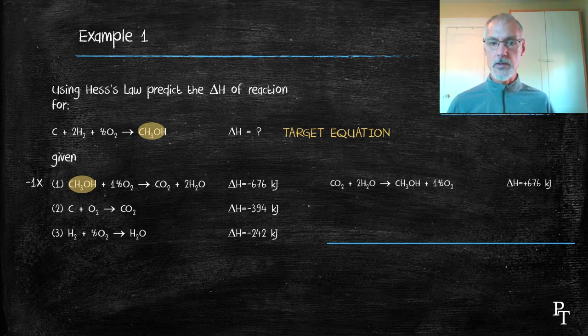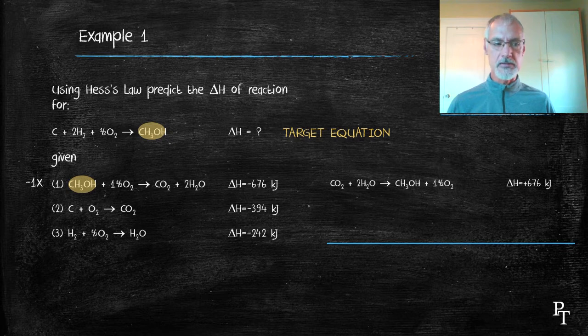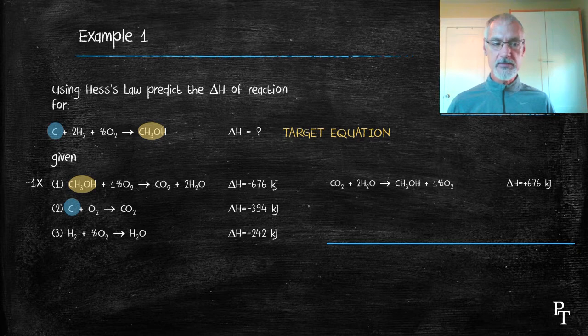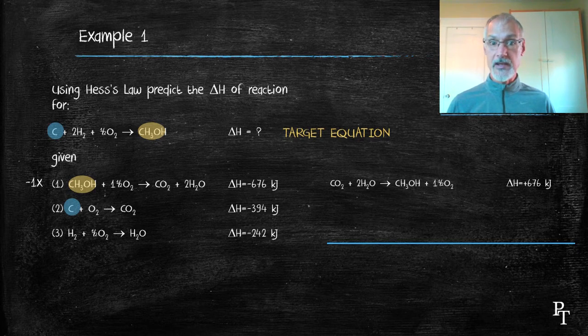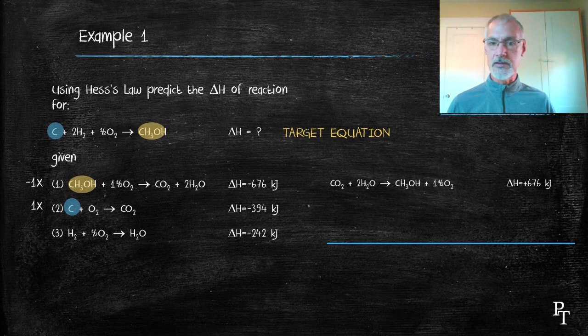So here I've shown the equation, manipulated and changed. The next thing I'm going to do is go to equation number two. What I notice in it is the presence of carbon. Carbon is unique to equation two and my target. I do notice they're both on the same side, so I don't need to flip the equation. And there's one of each, so I don't have to do anything to this equation. I'm just going to leave it the way it is, and I'll rewrite it here.